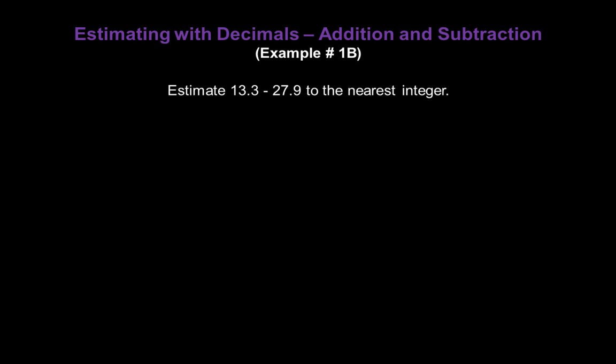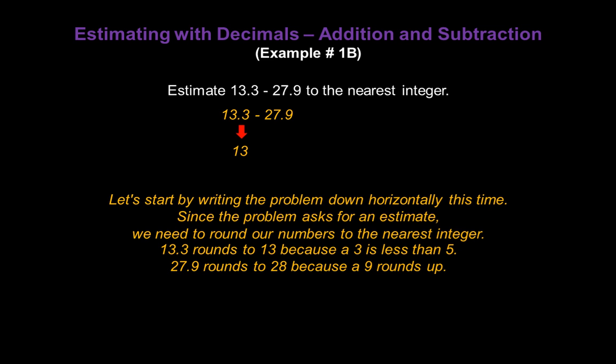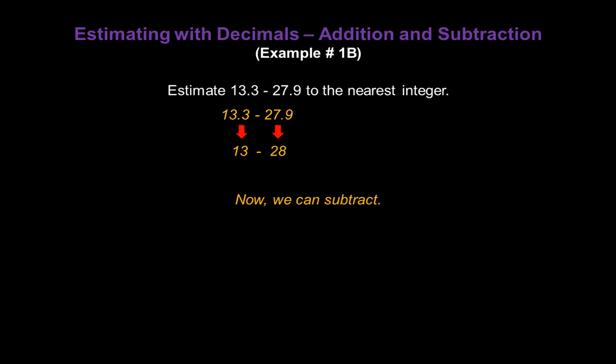Now let's estimate 13.3 minus 27.9 to the nearest integer. Let's start by writing the problem down horizontally this time. 13.3 minus 27.9. And since the problem asks for an estimate, we need to round our numbers to the nearest integer. 13.3 will round to 13 because a 3 is less than 5. So the first number will be 13. 27.9 will round to 28 because a 9 rounds up. So our second number is 28. Now we can subtract 13 minus 28.